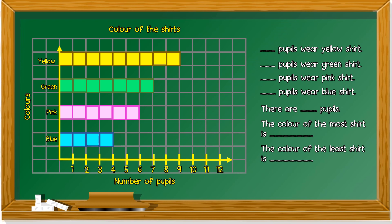First question. Pupils wear yellow shirt. So we look yellow. 9. Second. Pupils wear green shirt. This is green. 7.